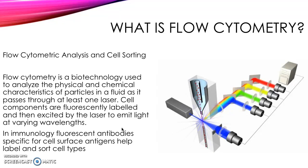In immunology, fluorescent antibodies specific for cell surface antigens help label and sort cell types. As you can see in the picture indicated here, we have a group of cells that have been labeled by antibodies passing through a detector and a laser, and then they are sorted accordingly.